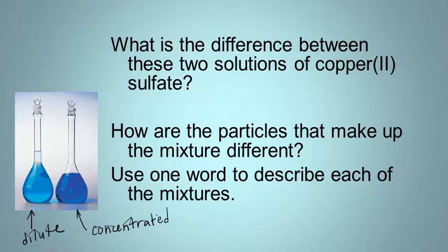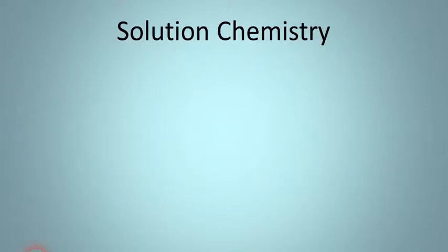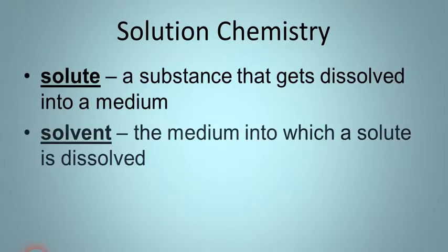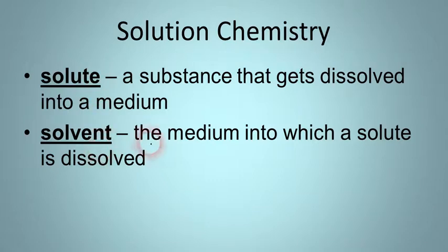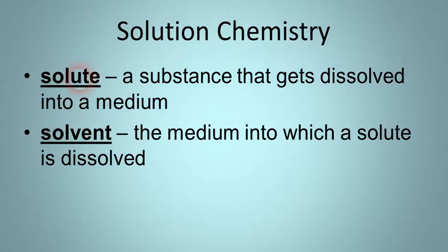Let's take a look at some simple vocabulary for solutions. Whenever you have a solution, you have two main components: a solute and a solvent. A solute is the substance that gets dissolved into something — for example, if you're making salt water, the solute is the salt. The solvent is the medium into which the solute is dissolved, and we very often think of the solvent as being a liquid, like water. In basic simple chemistry, we normally think of the solute as being a solid and the solvent as the liquid.